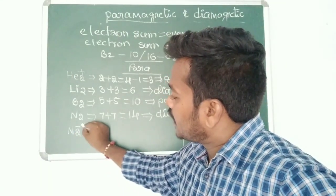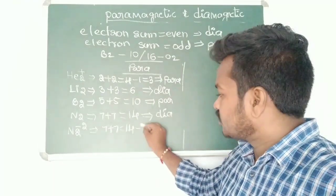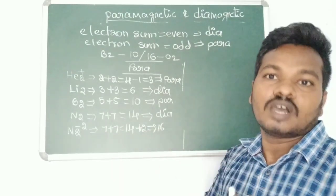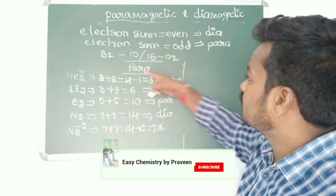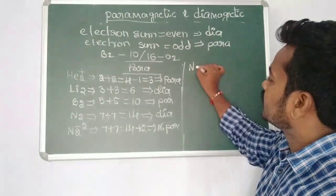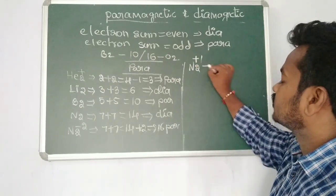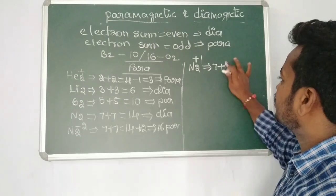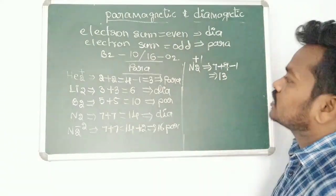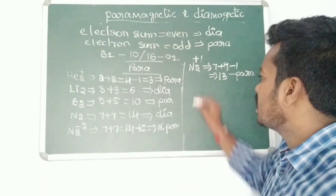Next, N₂²⁻: 7 + 7 = 14, and since it gains 2 electrons (negative charge means gaining electrons), 14 + 2 = 16 electrons. Even though 16 is an even number, it falls under the 16-electron exception, so N₂²⁻ shows paramagnetic nature.